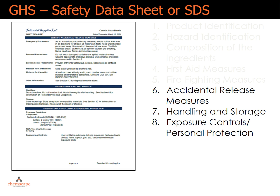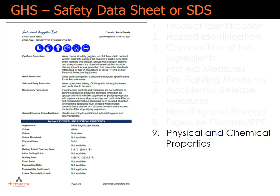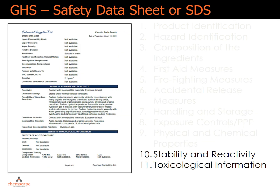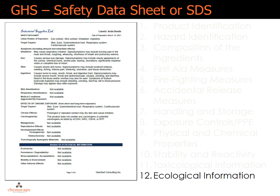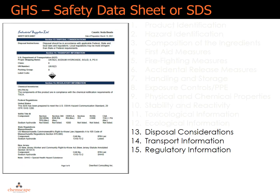Section 7 handling and storage, Section 8 exposure controls and personal protection, Section 9 lists the physical and chemical properties of the hazardous product, Section 10 lists the stability and reactivity of the hazardous product, Section 11 toxicological information, and Section 12 lists ecological information.